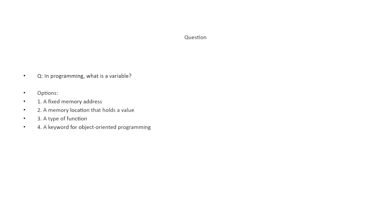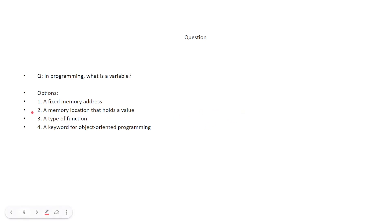In programming, what is a variable? The options are: a fixed memory address, a memory location that holds a value, a type of function, and a keyword for object-oriented programming. The correct answer is a memory location that holds a value.